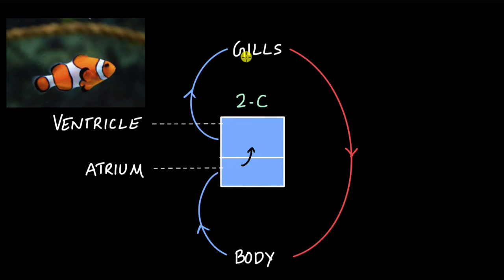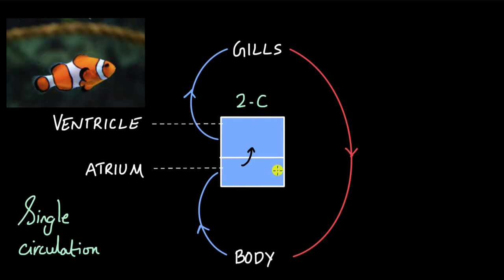If you start from the gills and try to complete one circuit, when you return back to the gills, you will see that the blood flows through the heart only once. This type of circulation is called single circulation — when in one complete circuit, the blood flows through the heart once.